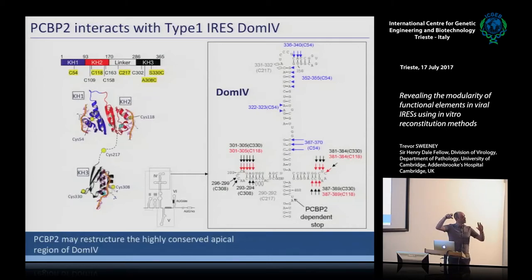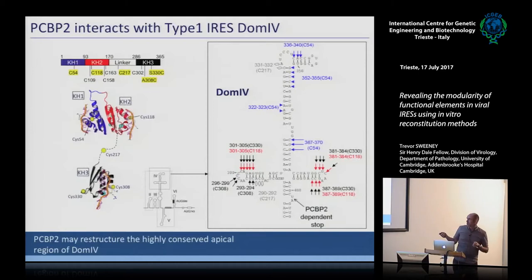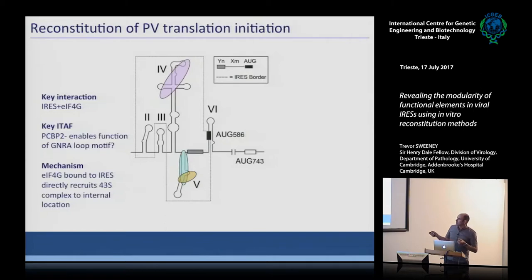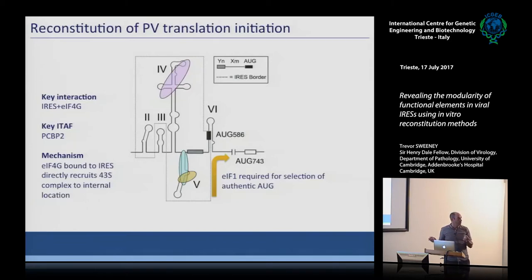Because we know the structure of the PCBP domains, we could assign where the protein actually interacts with the viral RNA. Mapping this onto the viral RNA showed PCBP binds to the large domain 4 at the top of the viral RNA, at critical C residues in two distinct motifs recognized by two different domains of PCBP. We think PCBP may be restructuring the RNA in this region to allow the GNRA loop to be presented correctly for IRES function.